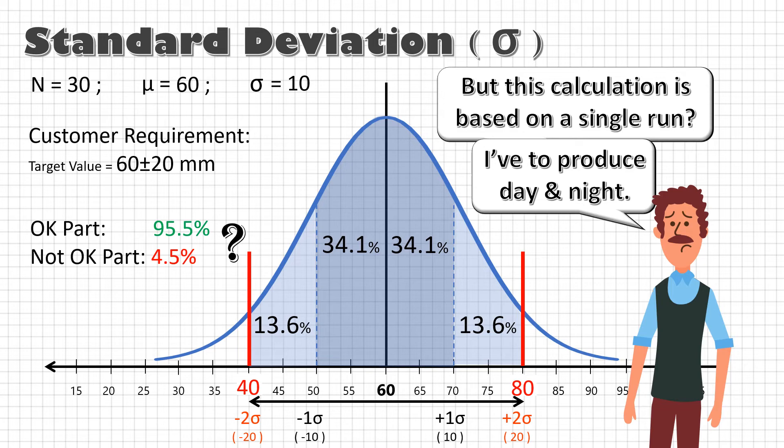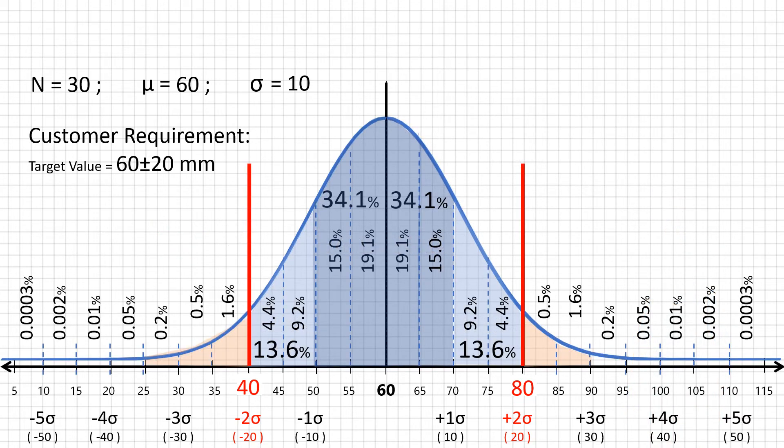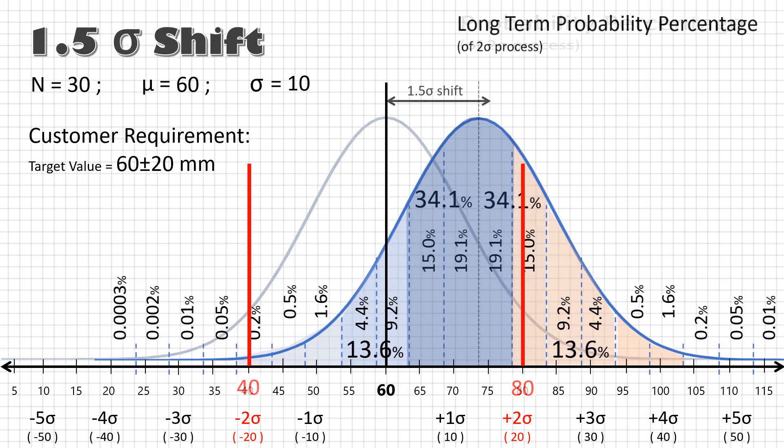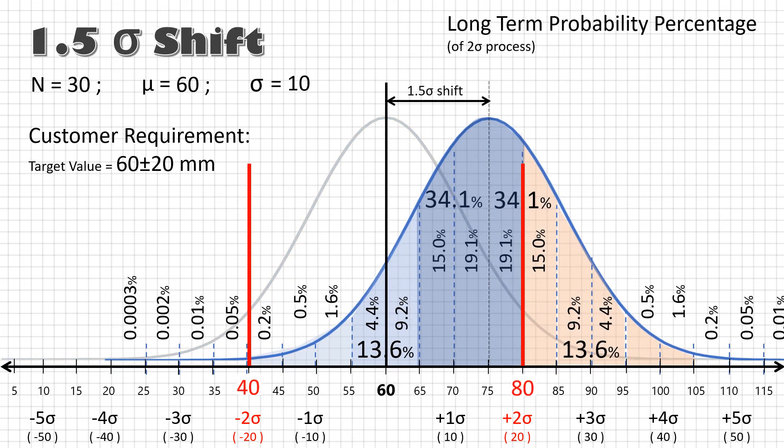So, there are chances that more parts will fall out of the range. To account for this common cause variation, a concept of 1.5 sigma shift is introduced. That means, in this 2 sigma process, where the probability percentage is 95.5%, I have to move the process location by 1.5 sigma to make adjustments for the common cause variation. And by doing so, my probability percentage between 40 and 80 drops to 69%. And the defect ratio will be 31%. That's huge.